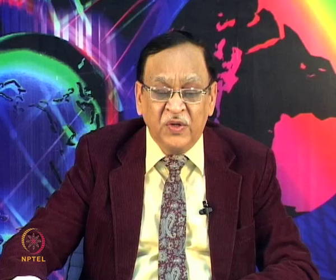If the wire is wrapped in one particular fashion it may give LHCP, and if it is wrapped in the opposite fashion it gives RHCP. Getting left-hand or right-hand circular polarization is very easy: one way you wind the wire gives one polarization, the other way gives orthogonal polarization. This is the mode that corresponds to the axial mode.